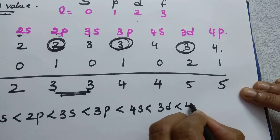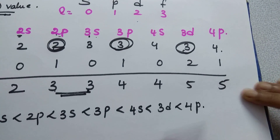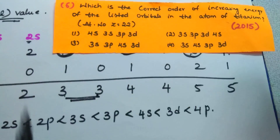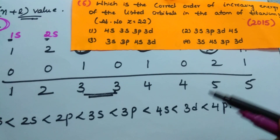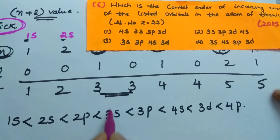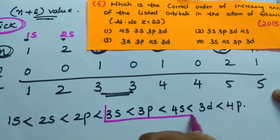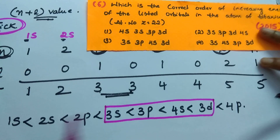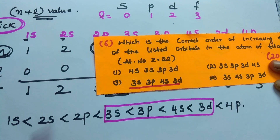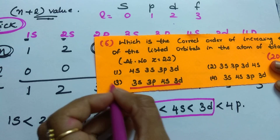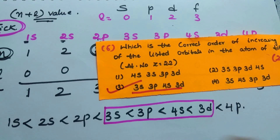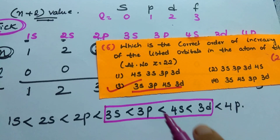So the correct increasing energy order from 3s onwards is: 3s, 3p, 4s, 3d. Looking at the options, the correct answer is the option showing 3s, 3p, 4s, 3d. This is the correct energy order.